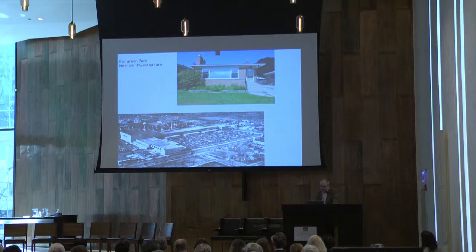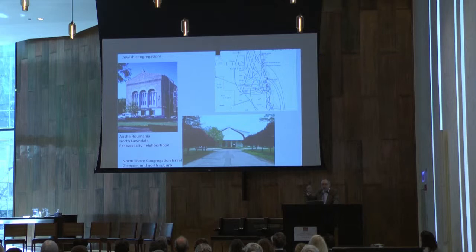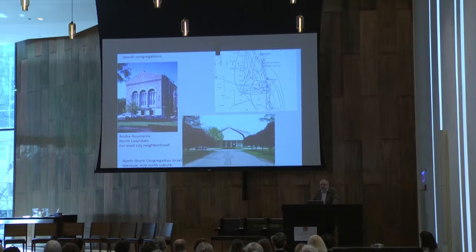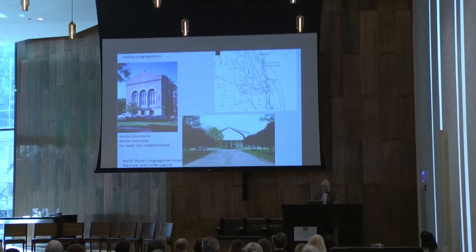The same is true of the Polish up on the northwest side, along what's now the Kennedy Expressway. There are some minor variations — for example, with the Jewish population, many of them were initially immediately west of the loop. Some moved south to places like Hyde Park, to the west to places like Lawndale. But then, unusually, they jumped direction, and a great many congregations moved north, up to Rogers Park and up to the North Shore suburbs.